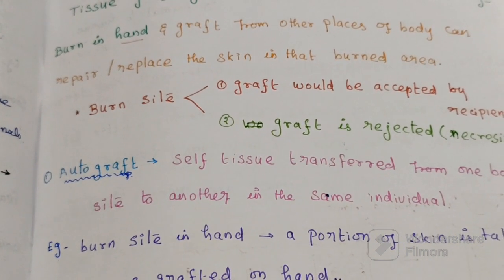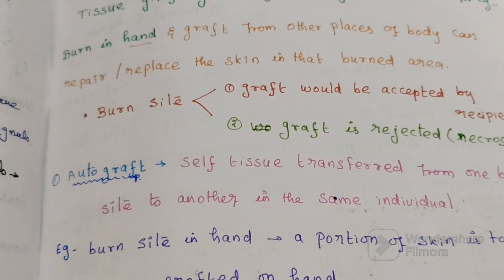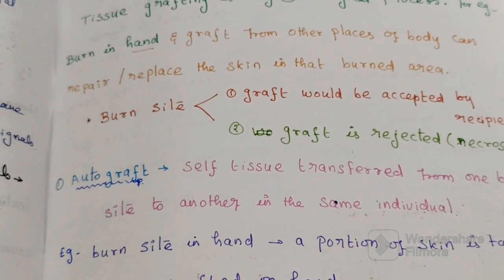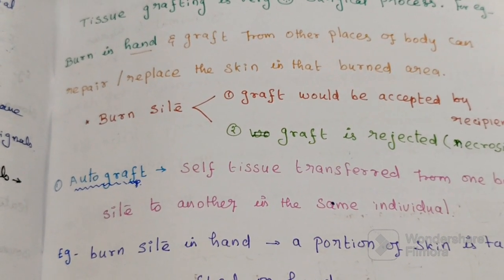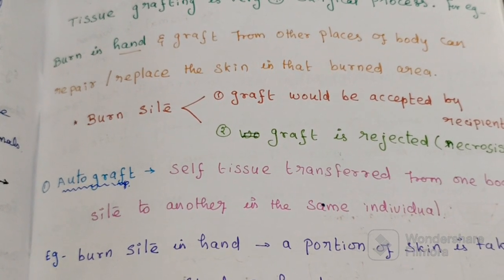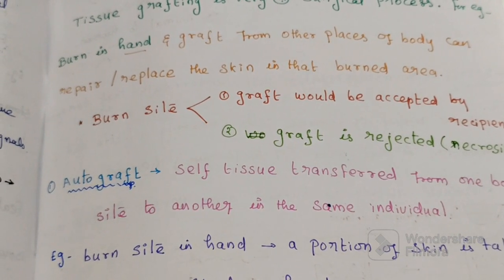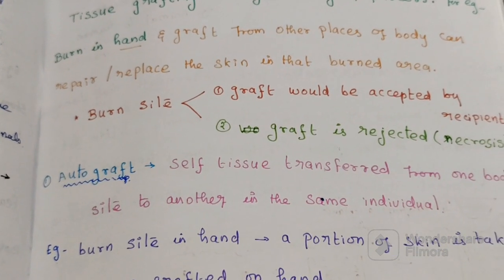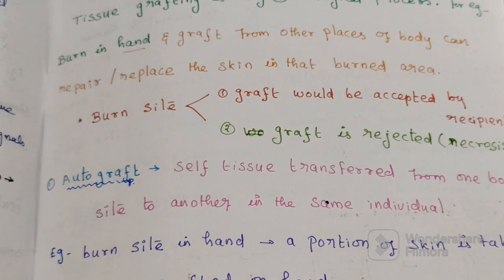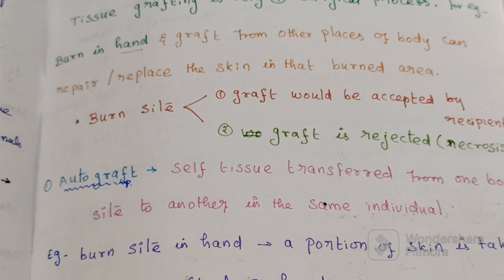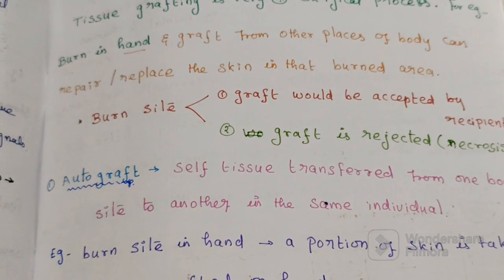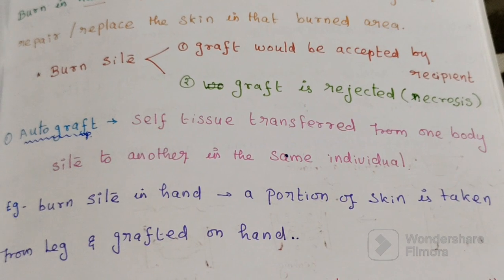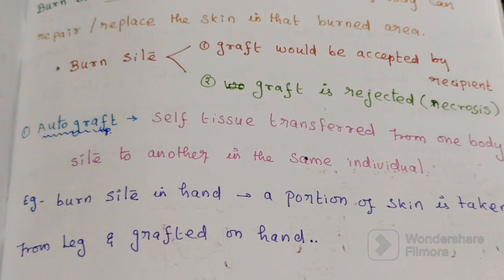The first question is why the graft is rejected and what are the key cellular players that mediate graft rejection. Then we ask what is the time scale of rejection. Before that, we will discuss a few terms.